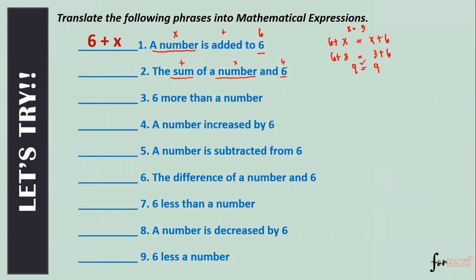A number x and six — we have x plus six. Number three: 'Six more than a number.' Six more than means addition. When you see 'more than,' we put the number first before six, so we get x plus six. The phrase after 'more than' comes first before the six. It can't be six plus x, though for addition it doesn't matter when solving.